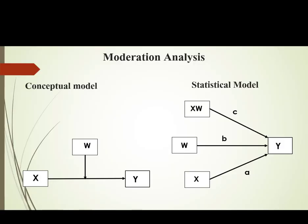The conceptual model represents the way you actually draw a theoretical framework. If you have one independent variable, one dependent variable, and a moderator, you can see in this picture: X represents the independent variable, Y is the dependent variable, and W represents the moderating variable. In the statistical model, we have three predictors of the dependent variable: X (independent variable), W (moderating variable), and the interaction term of X and W.